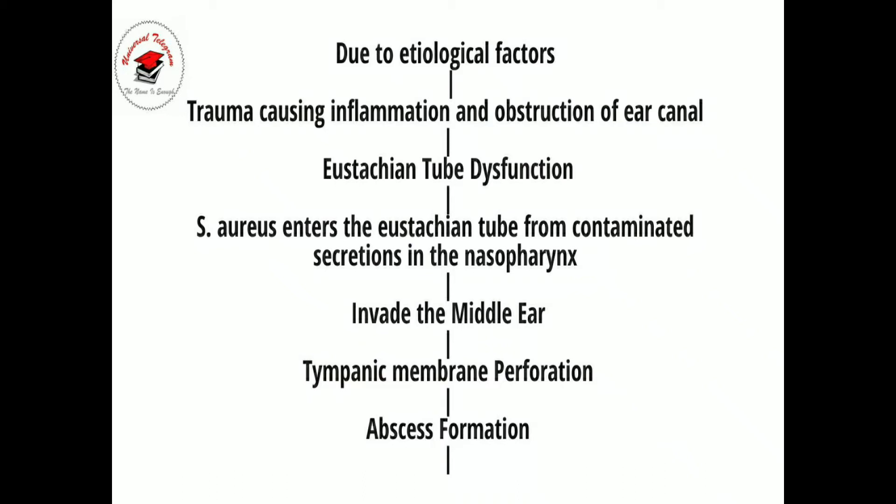Eventually, Eustachian tube dysfunction leads to negative middle ear pressure that causes tympanic membrane retraction and perforation. The exposure to chronic inflammatory mediators leads to weakening of the tympanic membrane while causing mucosal edema. Ongoing inflammation eventually leads to mucosal ulceration and consequently breakdown of the epithelial lining.